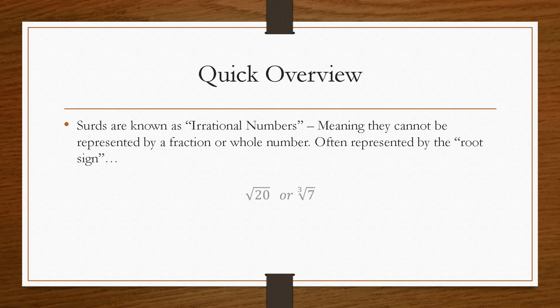So if you take a quick overview, a surd is known as an irrational number, meaning that it cannot be represented by a fraction or a whole number, and tends to be represented by the square root or sometimes even the cube root. Whereas a rational number can be expressed as a whole number, like 2, or a fraction, such as a quarter.